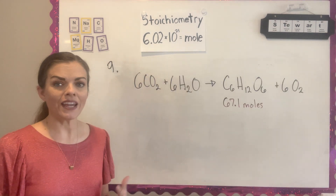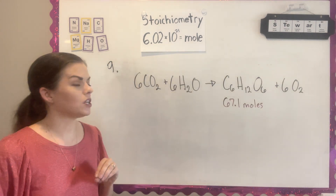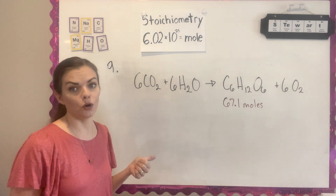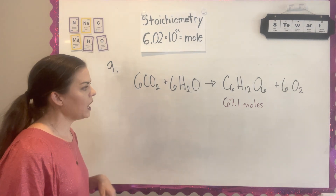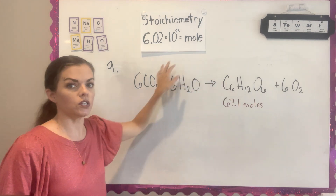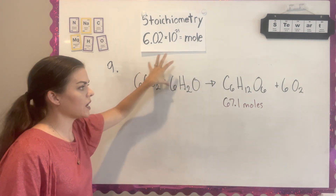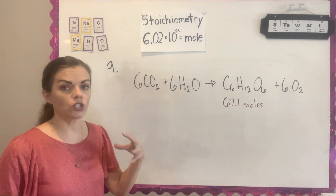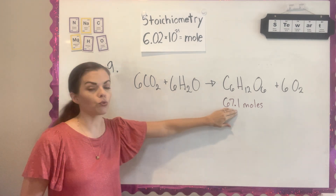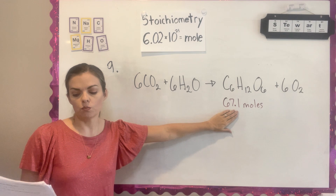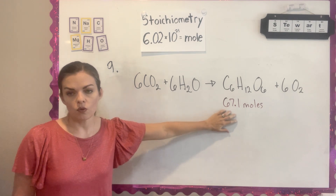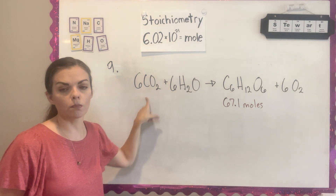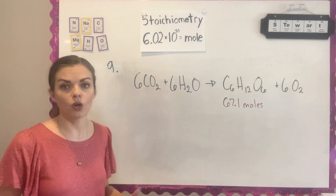Question 9 uses your biology knowledge and gives you the equation for photosynthesis. They provide the balanced chemical equation showing how a plant takes carbon dioxide and water and makes sugar and oxygen. The question tells me the plant needs to produce 67.1 moles of glucose, and asks how much carbon dioxide it has to absorb to make that much glucose.